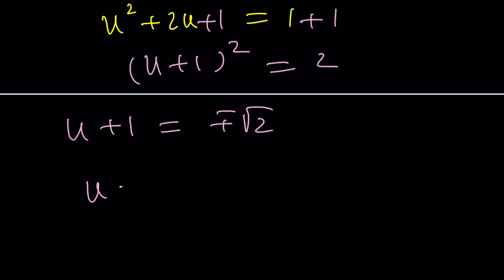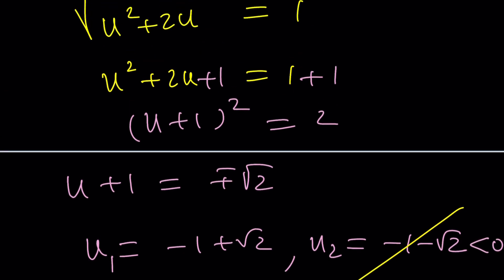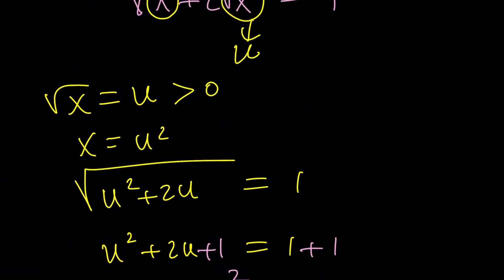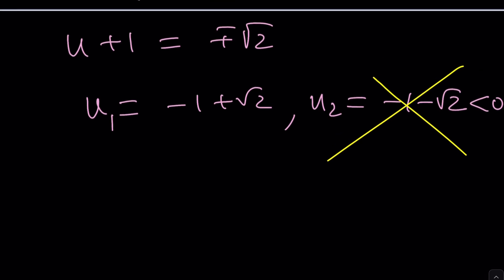Negative 1 plus root 2, let's call that u sub 1. And u sub 2, negative 1 minus root 2. Uh-oh. Negative 1 minus root 2 is definitely negative, because you are subtracting a positive number from a negative number, which makes it even more negative. Negatively larger. So there's no way this can work. Because remember, our rule says u must be positive. Always try to be positive, right? So then, this would be the only way it works.